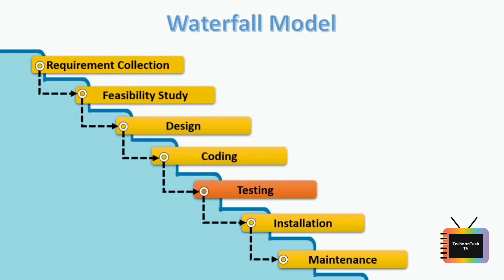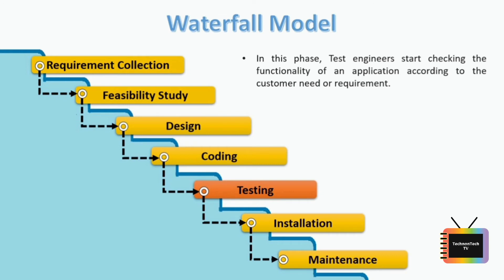Once the developer completes the coding phase, the application is handed over to the test engineers, who start checking the functionality of the application according to the customer's needs. During the testing process, the test engineer may encounter bugs or defects in the software that are not working as per the customer's requirement. If the testing team finds any defect or issue, they send a bug report to the development team with a proper explanation. The developer checks whether the bug is valid; if so, they fix it and the tester re-tests to verify the fix.